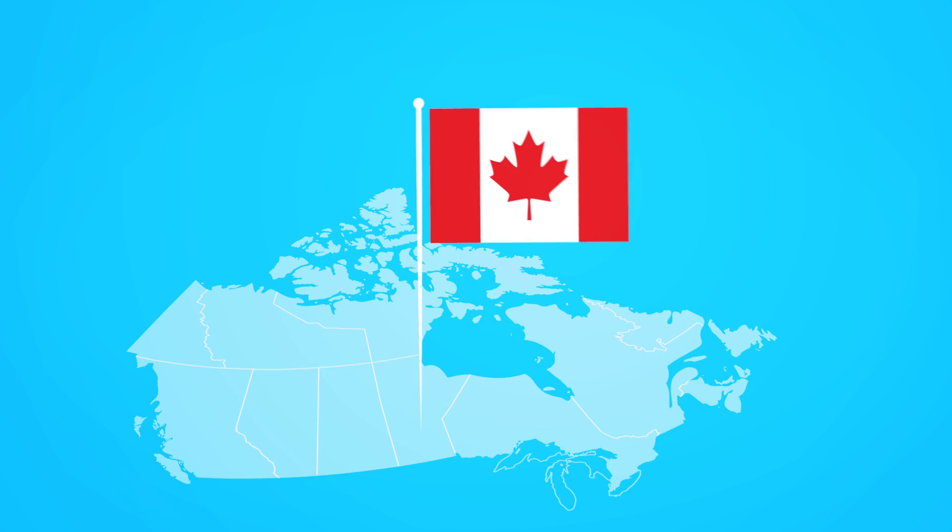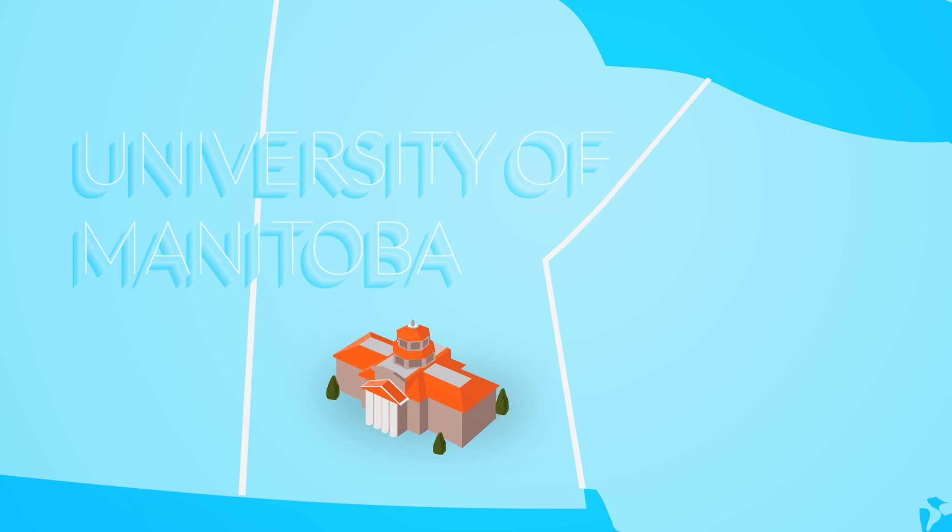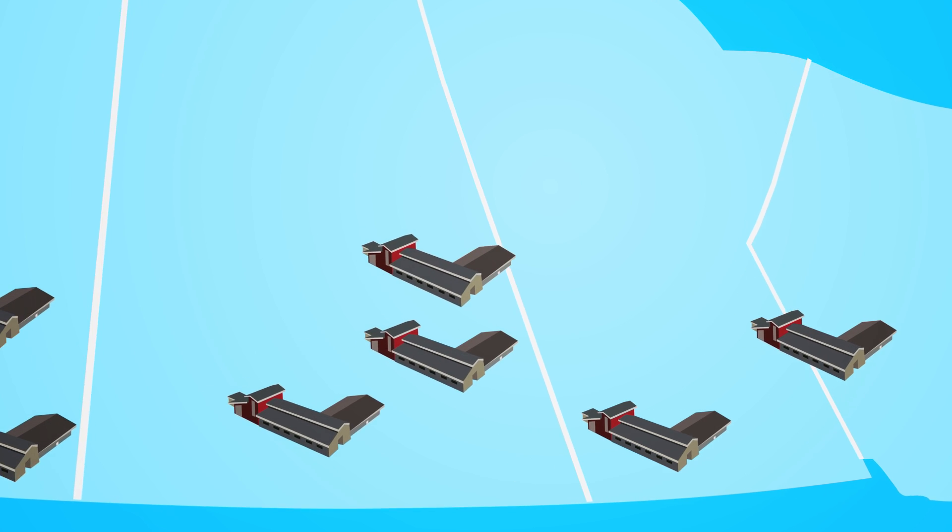Canola is 100% Canadian and was first bred on the prairies by scientists at the University of Manitoba and Agriculture Canada research stations in the late 1960s and early 1970s. The first variety was called Tower.